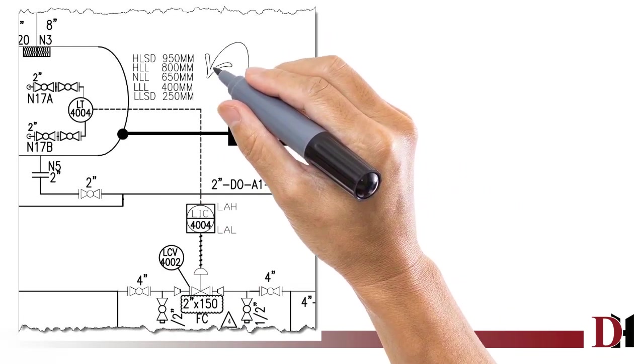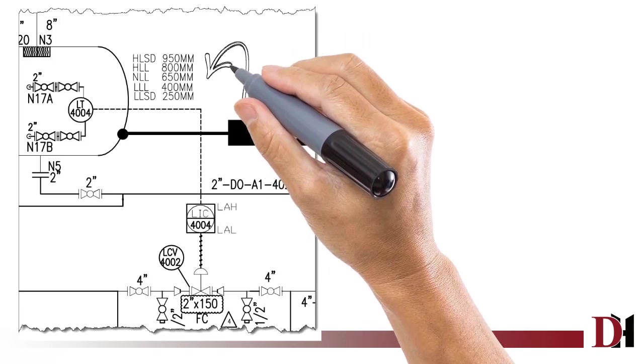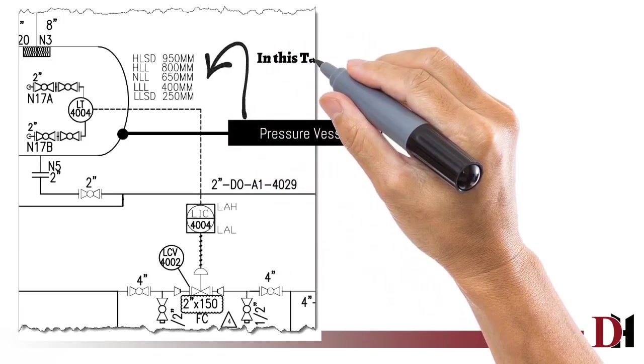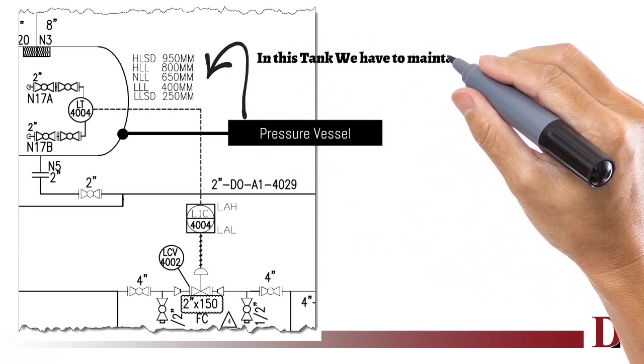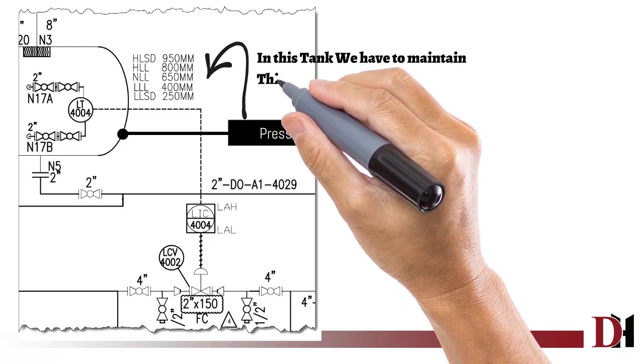For level measurement, we need to define first the low level and the high level, as you can see in this P&ID.